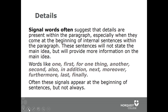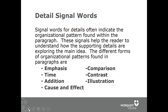Signal words often suggest that details are present within the paragraph, especially when they come at the beginning of internal sentences. These sentences will not state the main idea but will provide more information on it. Words like 'one,' 'first,' 'for one thing,' 'another,' 'second,' 'in addition,' 'next,' 'moreover,' 'furthermore,' 'last,' or 'finally' are all signal words. Signal words can be broken down based on what role they play within the paragraph — they indicate the organizational pattern found within it.